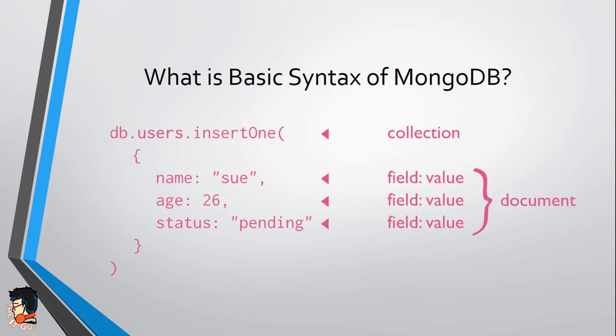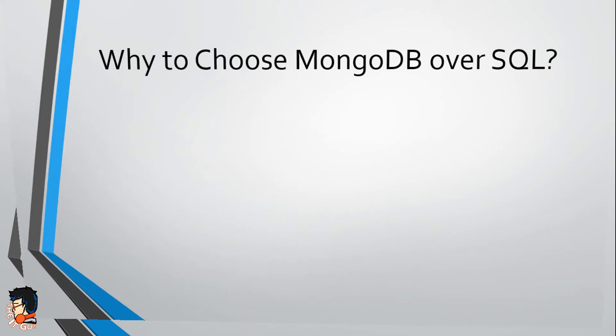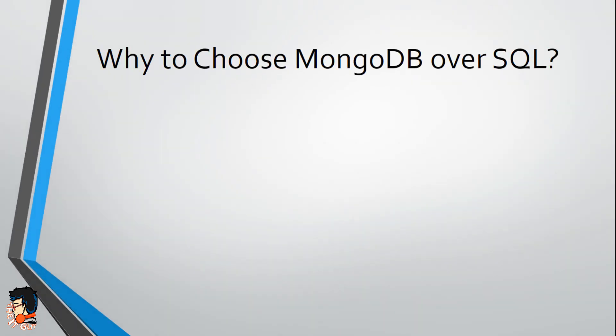The JSON-like syntax uses curly braces and within them we have key-value pairs. A key-value pair is a key element, colon, then the value of that key. For example, 'name' is the key and its value is 'Su.' This is basically a key-value pair, and MongoDB uses this syntax to store data.